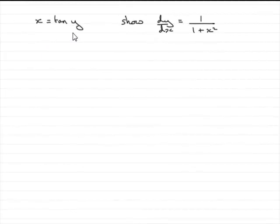Now in this question we've got x equals tan y and we've got to show that dy/dx equals 1 over 1 plus x squared. So how are we going to do this?